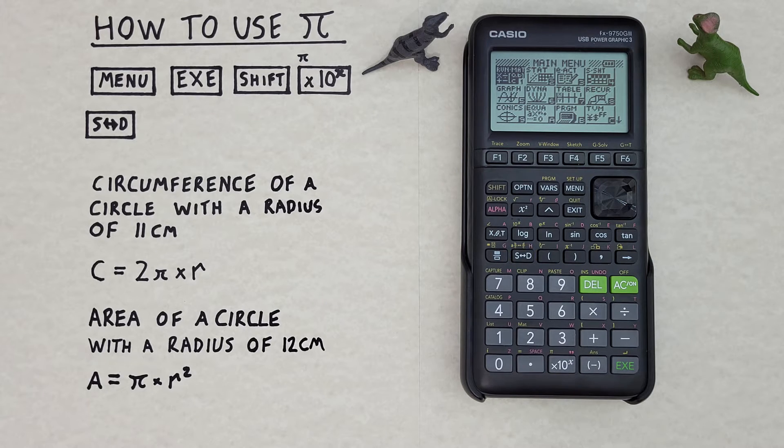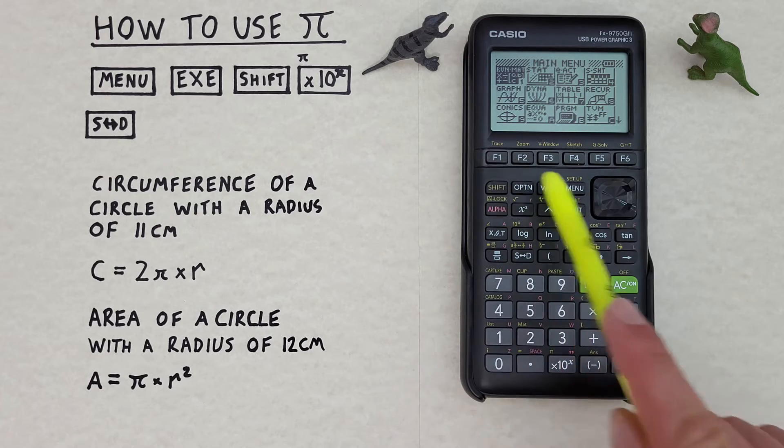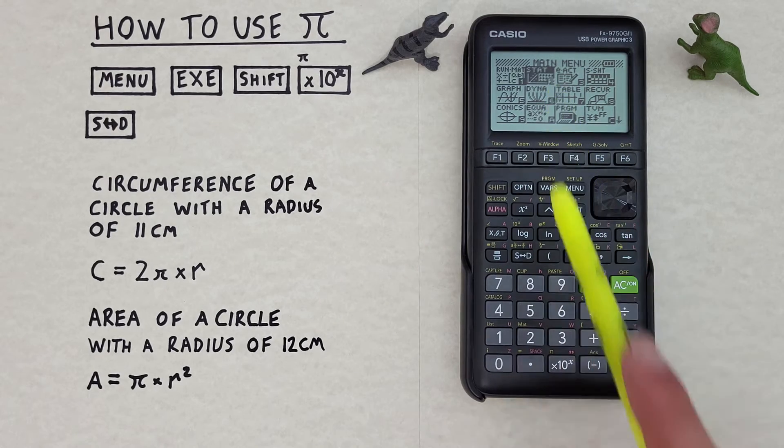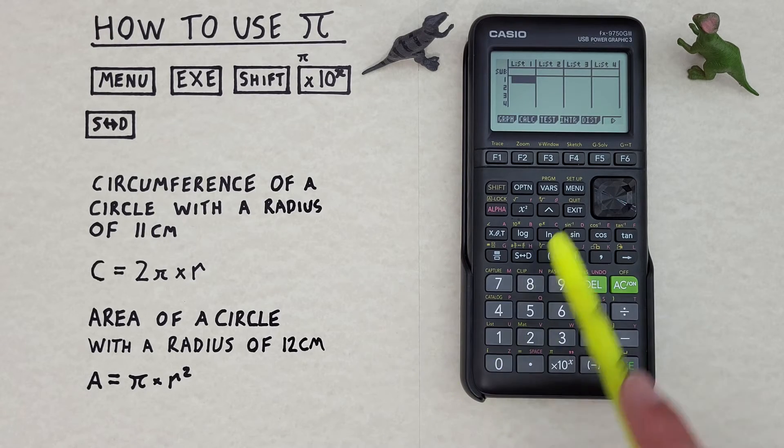When we first turn on this calculator we're usually brought to the main menu screen. If we're not brought to that but instead in some other mode, for example the stats mode, we can get to the main menu by pressing the menu key here.